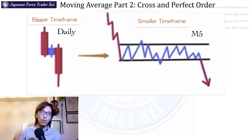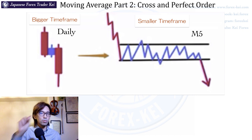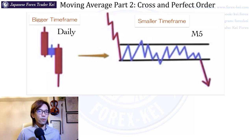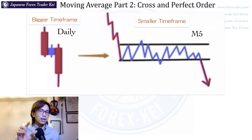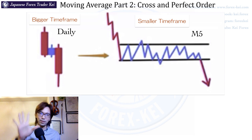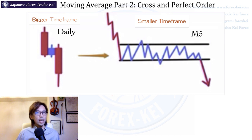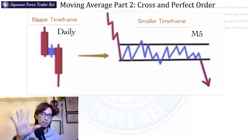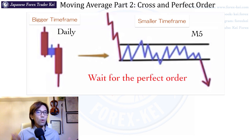So the market previously went down, created a range for some time, and then it broke it downwards and kept its bearish momentum by following the major bearish trend. Basically, this range was the consolidation to prepare for the continuous downtrend. The daily chart shows the engulfing candle pattern I talked about in price action part 5, and that candle pattern is one of the indications that the price will keep going down. How you can trade this using moving average is: when it breaks out on the 5-minute chart, you wait for the perfect order in moving average.